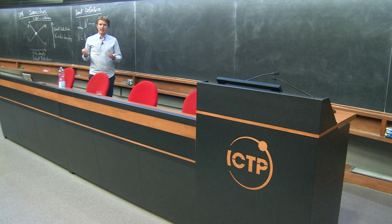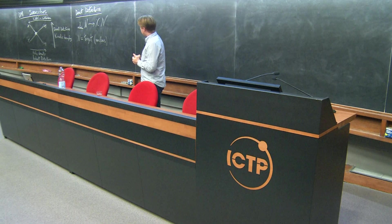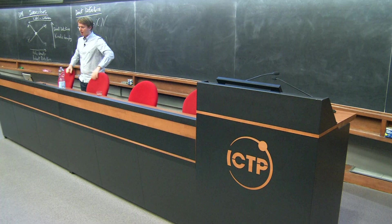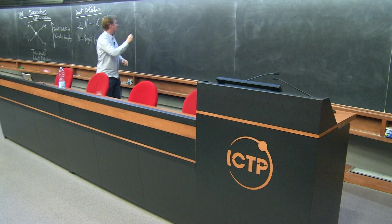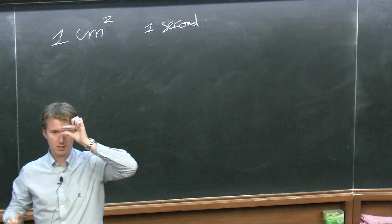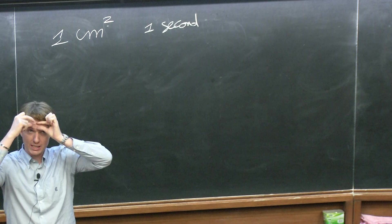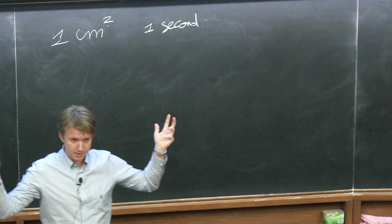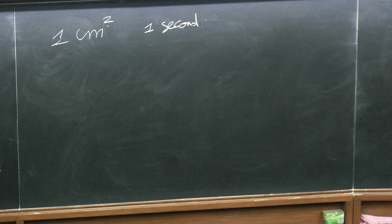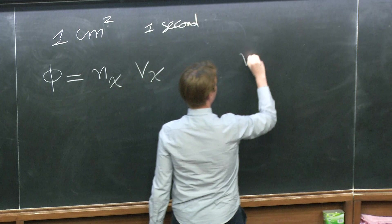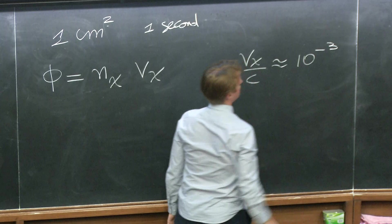To estimate the rate we need to know the flux here on Earth. The flux is number density times velocity. The velocity around the solar system is 10^-3 times the speed of light — so these particles are non-relativistic today in our galaxy. The number density is the ratio of the mass density to the mass of a single particle. So for each mass we can estimate the flux.